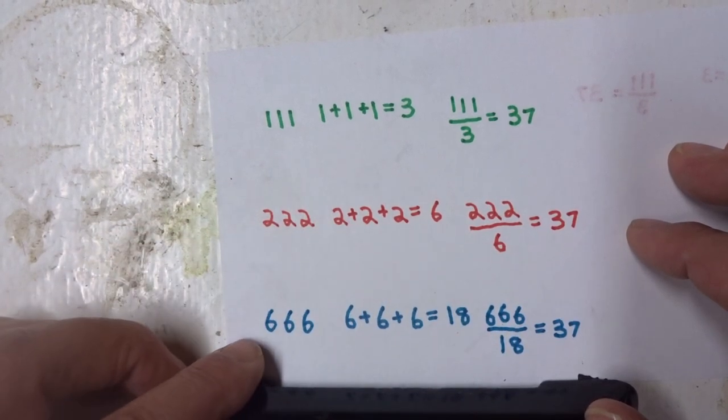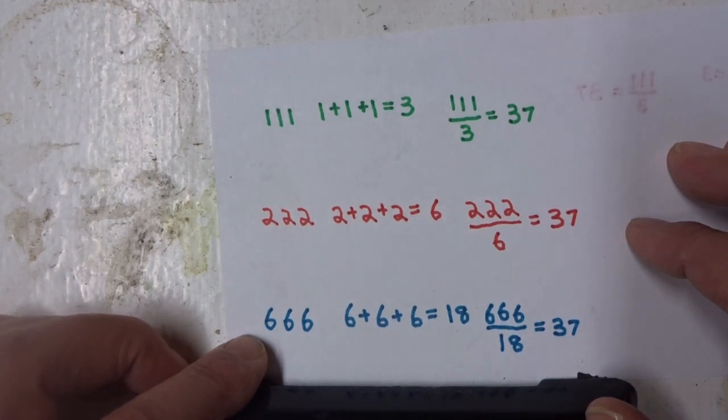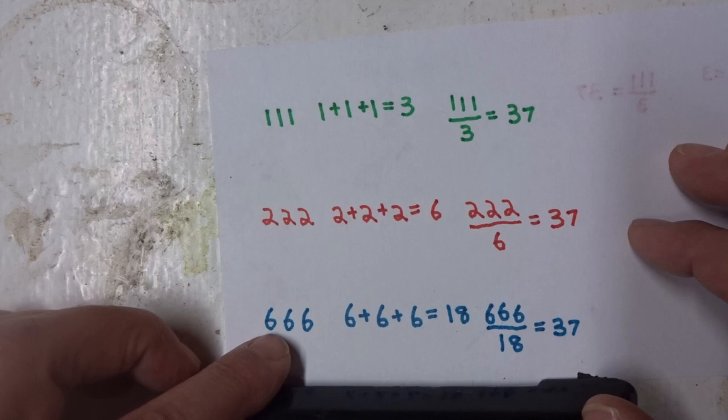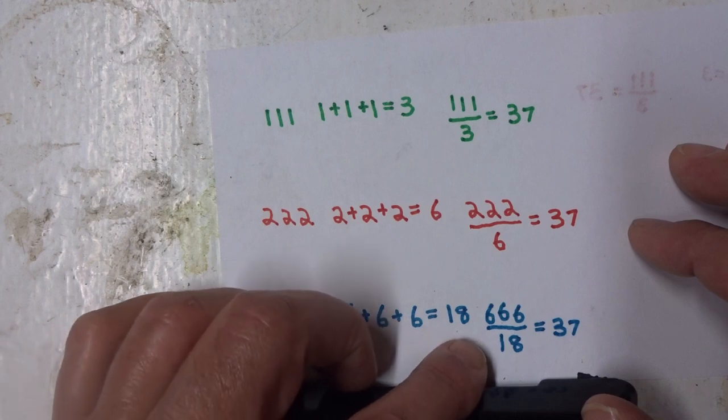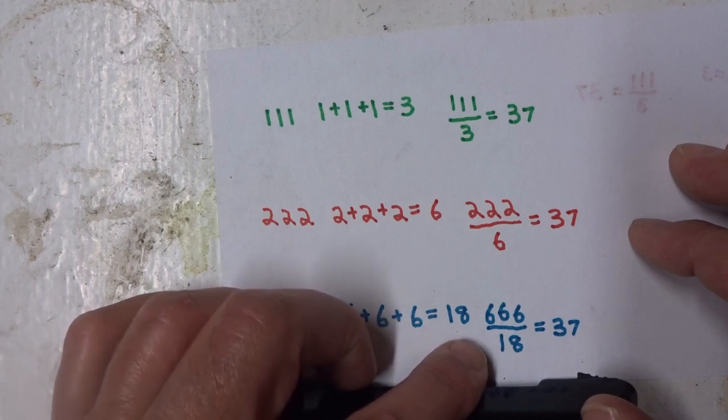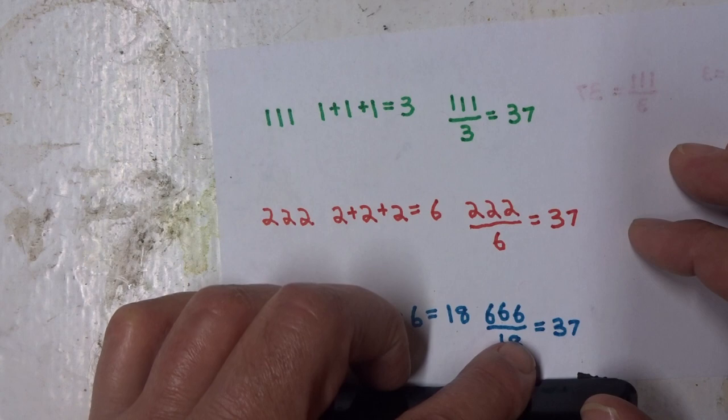And this applies to any three-digit number. Here we take 666. We sum the numbers together, and we get 18. 666 divided by 18 is, once again, 37.